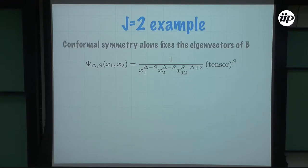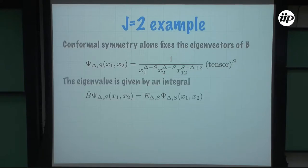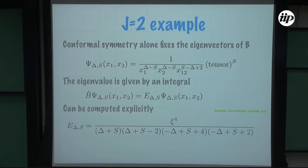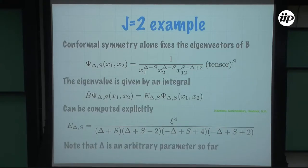In the particular case when you only have two scalars, due to conformal symmetry there is an essentially unique tensor structure you can write, parameterized by a continuous parameter δ and also the point x₀ around which you apply it — here I just set it to zero. There is this continuous parameter δ, and the spin s should obviously be an integer. It is guaranteed to be an eigenfunction of B because B commutes with the full conformal group.